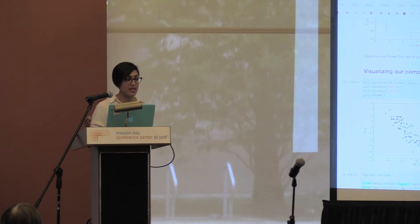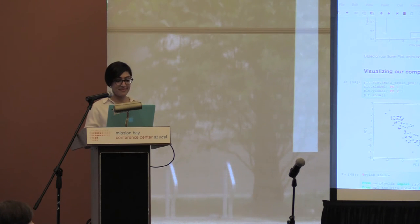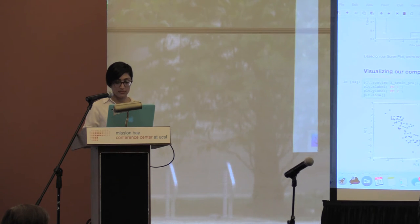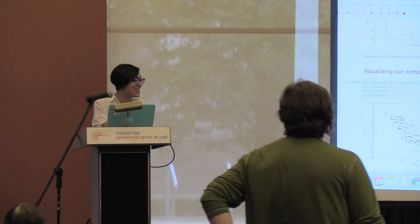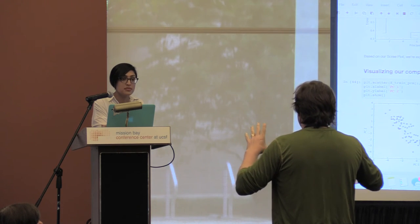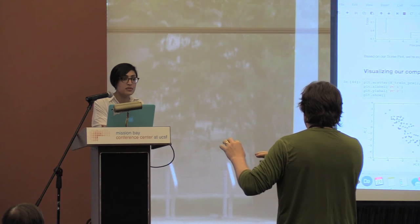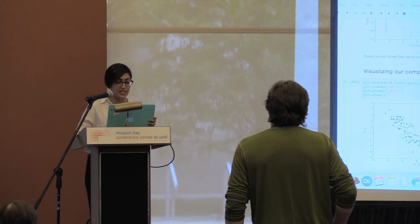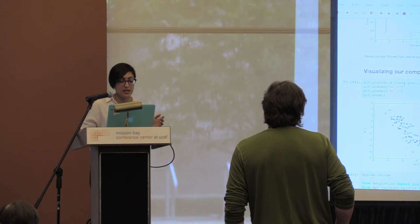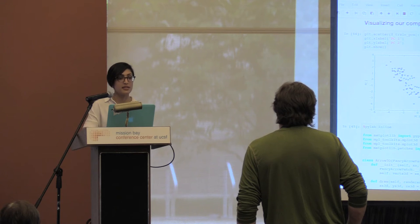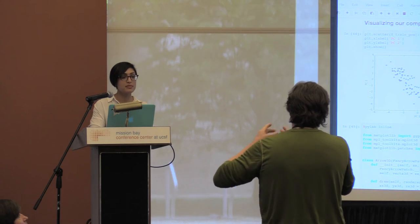Q&A. A question came up: did I run the PCA on the training set, store the eigenvectors it gave, and then apply that to the test set? Yes, you can do that. I trained it on the train, and you can then test and validate it on the test data. Here I just went through the steps for visualization, but I can validate how well it performed on my test data. You would keep the PCA in your pipeline.